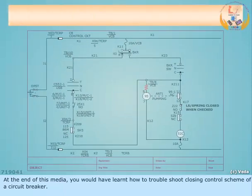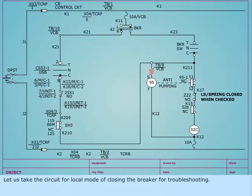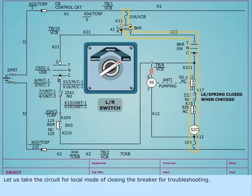At the end of this media, you would have learned how to troubleshoot the closing control scheme of a circuit breaker. Let us take the circuit for local mode of closing the breaker for troubleshooting.